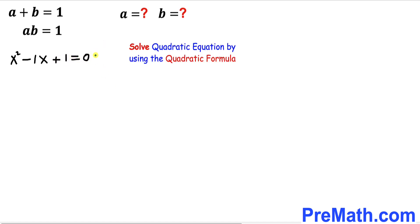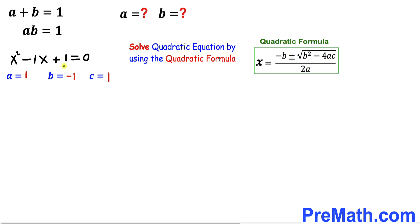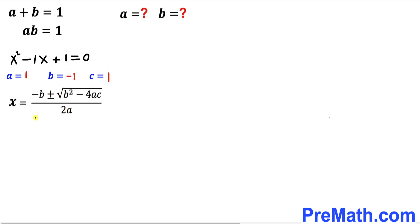We can see this is a quadratic equation and we are going to solve it for x using the quadratic formula. In our case, the coefficient a of x squared equals to 1, the coefficient b equals to negative 1, and the constant c equals to 1. Let's fill in the quadratic formula.